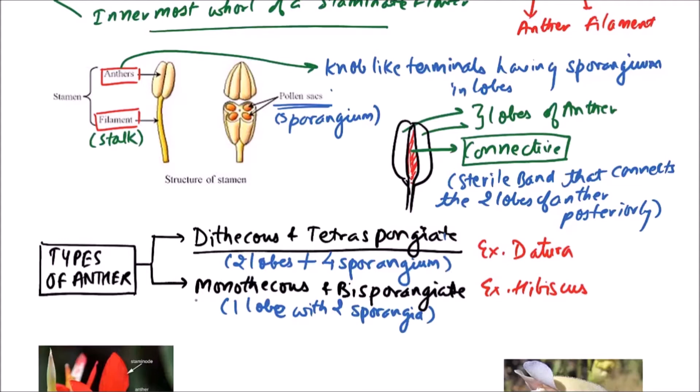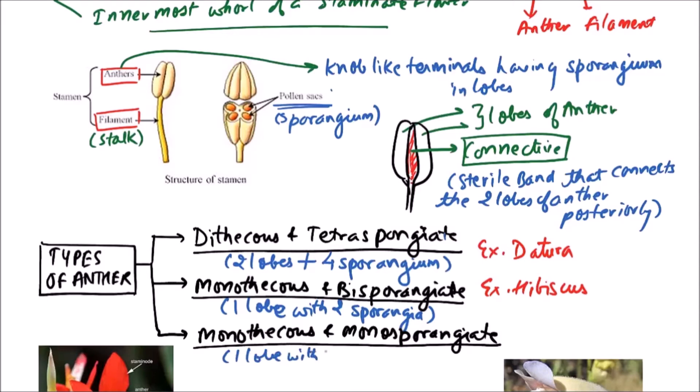Next one is very rare type of anther that is monothecous and monosporangiate. In this type of anther, one lobe with one sporangium is there. Example include Arceuthobium which is also known as dwarf mistletoe.